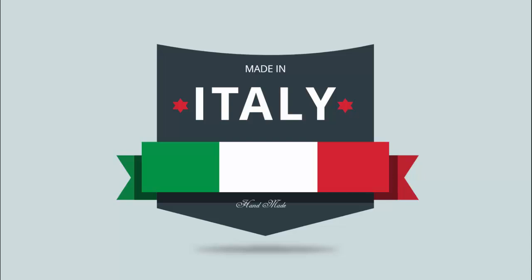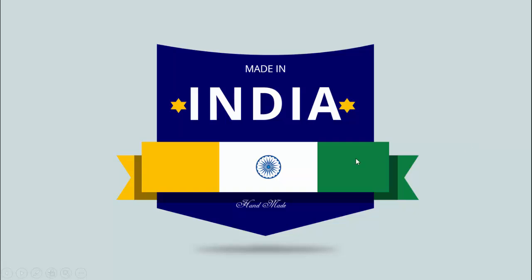In today's tutorial I'm going to show you how to create a 'Made in' badge by country. I have created this badge for 'Made in Italy' — I've added the flag of Italy, some stars, a shadow effect, and text of your choice. At the bottom I've added a shadow effect as well. I've created badges for five to six different countries.